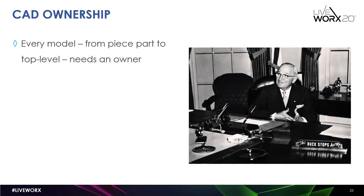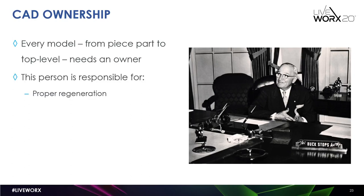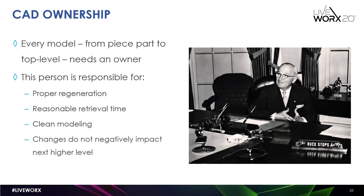Every single CAD model and drawing has to have an owner. This person is responsible for ensuring that the model geometry is correct. Usually this is pretty easy to manage at the individual part and sub-assembly level — the person who creates, inherits, or releases the drawing is often the person responsible for that part or assembly. This often breaks down when you get to the higher levels and top levels of the product. Who is responsible for ensuring that the CAD is clean and not broken? It's imperative that someone is assigned in that role, and you don't have people pointing fingers at each other. The CAD owner is responsible for proper regeneration, reasonable retrieval time, clean modeling, and ensuring that changes made at that level don't negatively impact the next higher level.